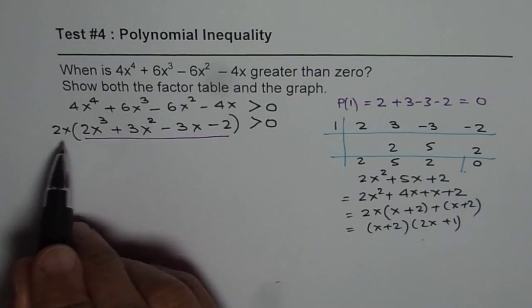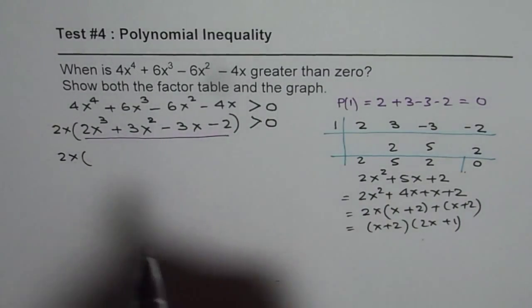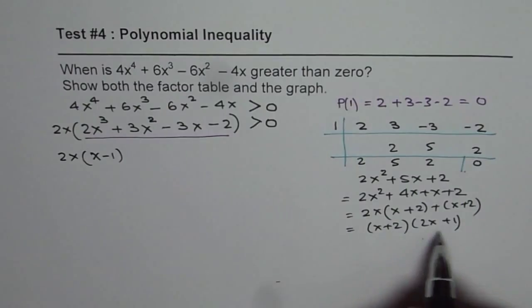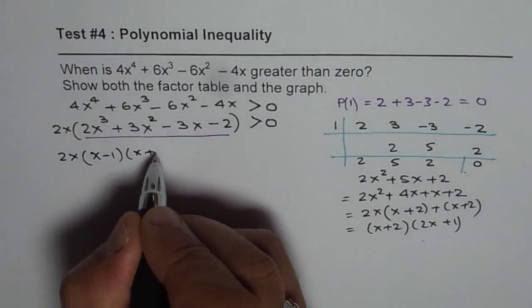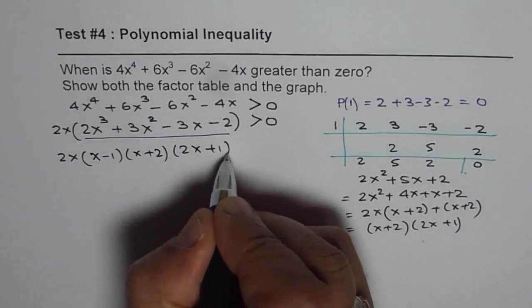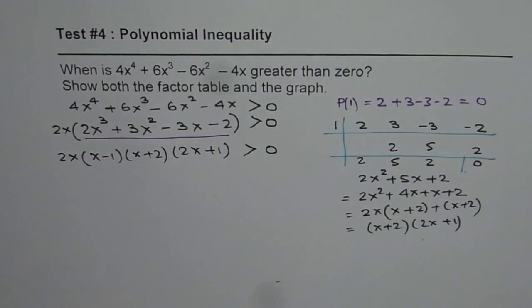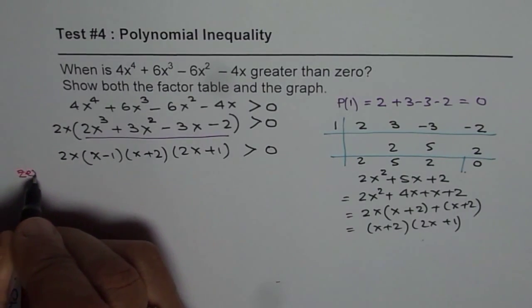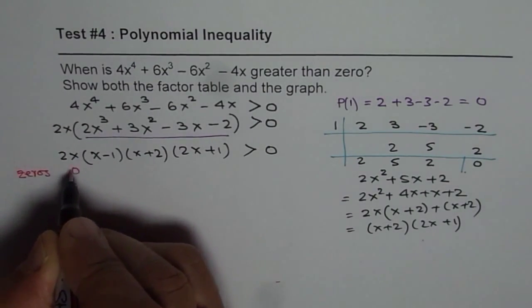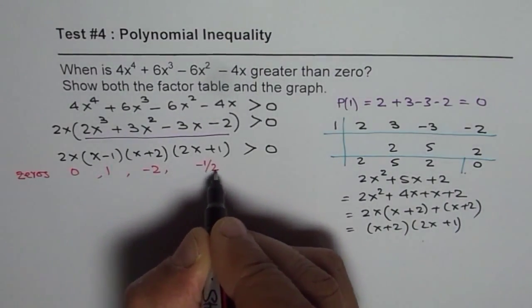Now after factoring we can write down this polynomial as 2x times x minus 1 times x plus 2 times 2x plus 1 and that should be greater than 0. So this is the inequality which we are trying to solve. Now we clearly know the zeros. The zeros are at x equals 0, this 0 is at 1, this 0 is at minus 2 and this is at minus half.